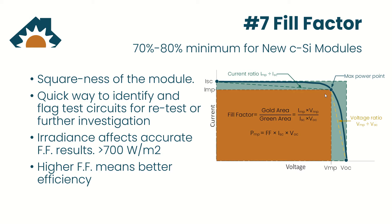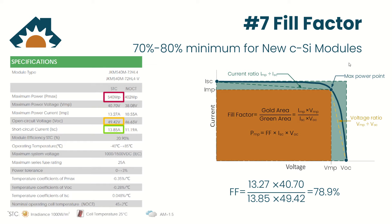Let's see what the fill factor is for the module datasheet we were just looking at. Analyzing the datasheet gives us a good baseline to compare fill factor results to. We have our IMP of 13.27, multiplied by our VMP of 40.70, then divided by our ISC of 13.85 multiplied by our VOC of 49.42. That gets us 78.9%.